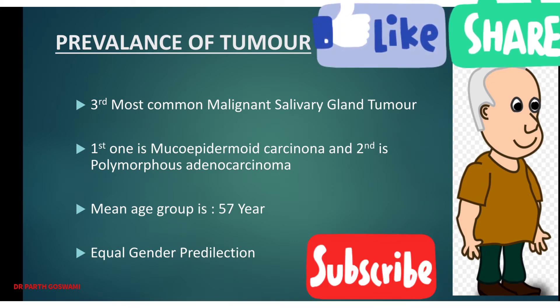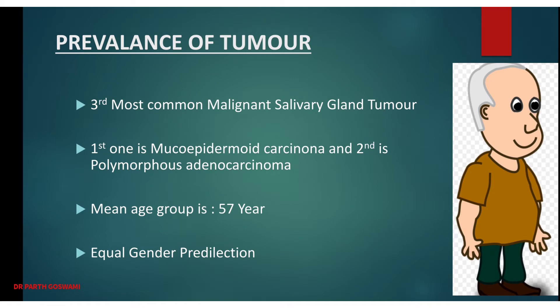Adenoid cystic carcinoma is the third most common malignant salivary gland tumor. The first is mucoepidermoid carcinoma, the second is polymorphous adenocarcinoma, and this is the third. The mean age of occurrence is around 57 years, commonly between 50 to 60 years, with equal gender predilection.